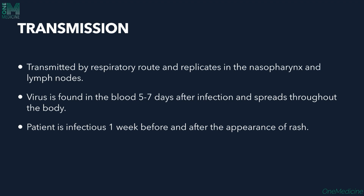Regarding transmission, no vector is required. It is transmitted by the respiratory route and replicates in the nasopharynx and lymph nodes. The virus is found in the blood 5 to 7 days after infection and then spreads throughout the body. The person is infectious one week before and one week after the appearance of the rash.